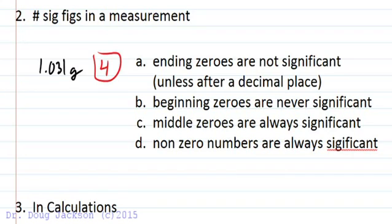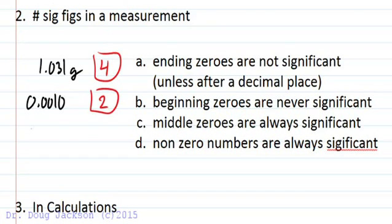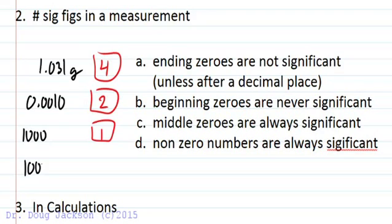As a contrast: beginning zeros are not significant, but ending zeros after a decimal place are, and non-zero numbers are — so a number like 0.050 has two significant figures. Ending zeros are not significant unless after a decimal place or in between significant figures. If we want to make all the zeros significant in 1,000, we put a decimal point at the end — 1000. — and now we have middle zeros instead of ending zeros, giving us four significant figures.